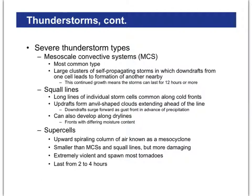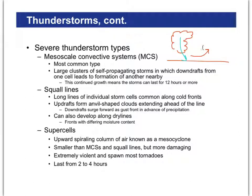When we have severe thunderstorms, there are a couple of different kinds. Mesoscale severe thunderstorms are ones we may have had in our area. These are storms that don't just put themselves out after a few hours — they kind of self-propagate. When downdrafts occur from one cumulonimbus cloud, they can actually cause updrafts elsewhere, forming another cumulonimbus cloud. So this isn't just a single cumulonimbus cloud that puts itself out, but rather it self-perpetuates. These can last for several hours.